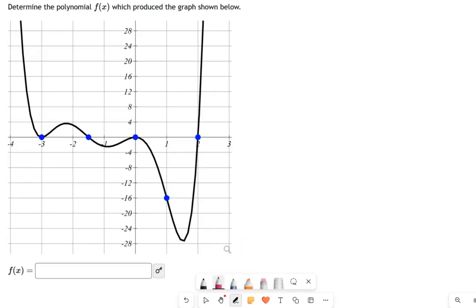We have the graph of a polynomial on the left, and we're told that we want the equation which produced the graph. So this is fairly straightforward in some ways. In another way, it's kind of tricky. So let's take a look at each of these intercepts first.